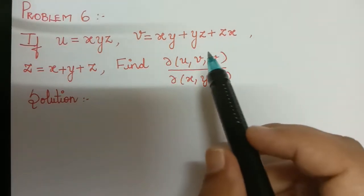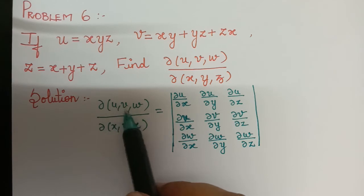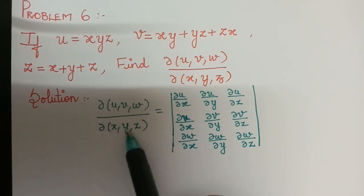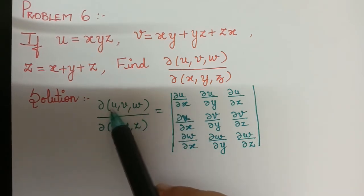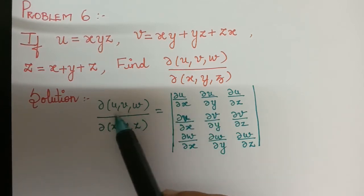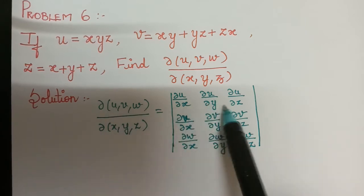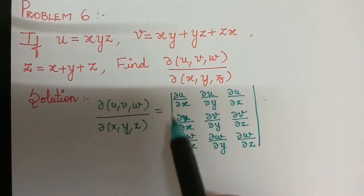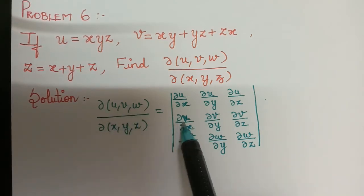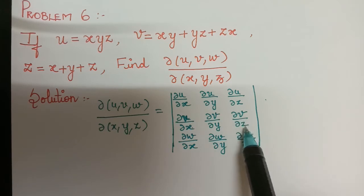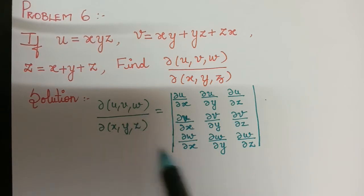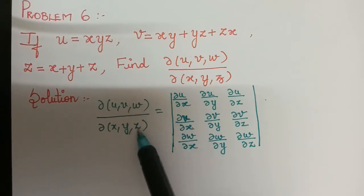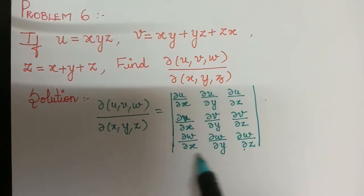By the formula of the Jacobian, we have the Jacobian of u, v, w with respect to x, y, z equal to the determinant of the partial differentiation of u with respect to x, y, and z in the first row; partial differentiation of v with respect to x, y, and z in the second row; and partial differentiation of w with respect to x, y, and z in the third row. So this gives the value of the Jacobian.